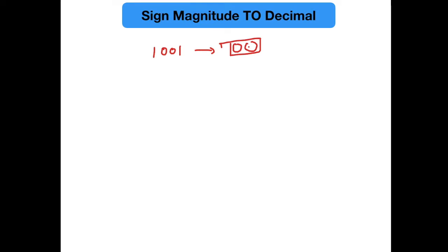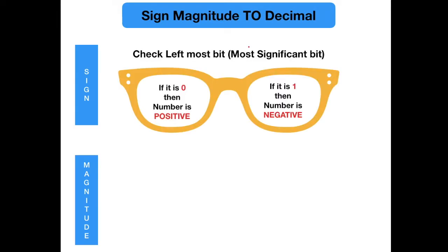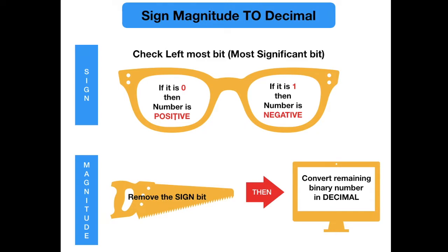We need to find two pieces of information: the sign and the magnitude. To find the sign we look at the leftmost bit, and if it is zero then the number is positive, else the number is negative. To find the magnitude we get rid of the sign bit and then convert the remaining binary number to decimal.